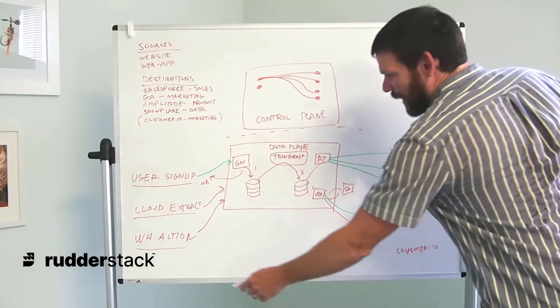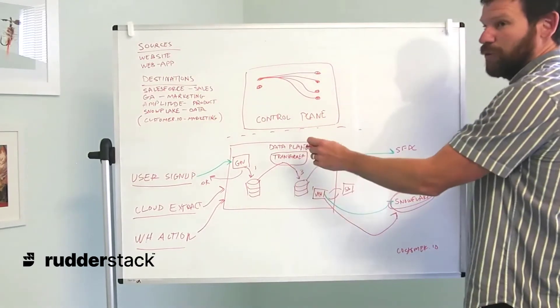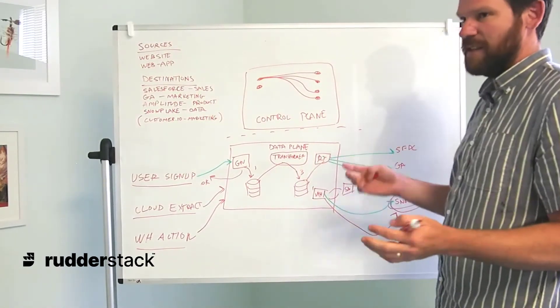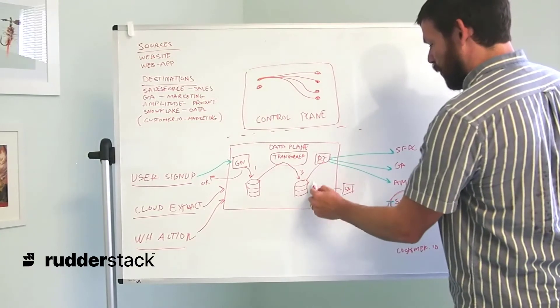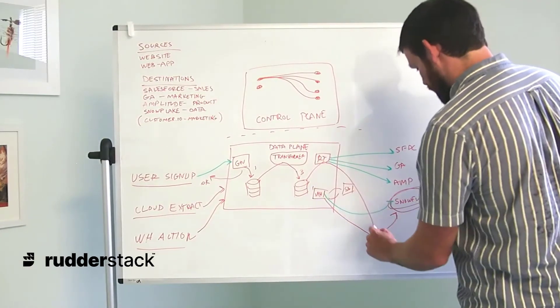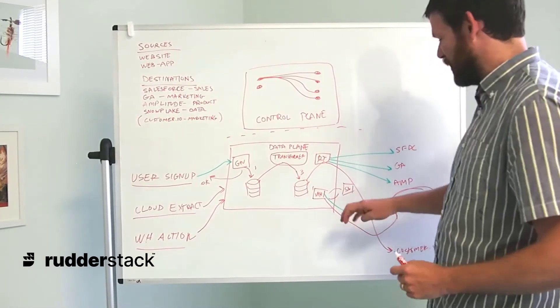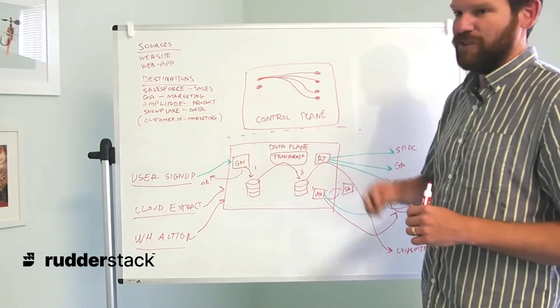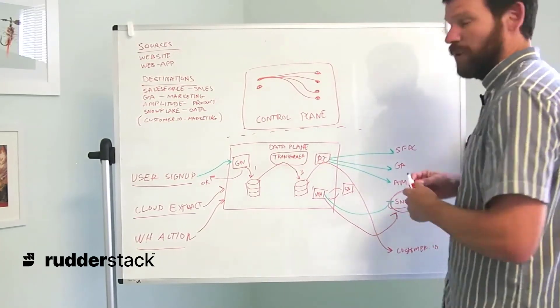That's going to be sent back through Rudderstack through Warehouse Actions and go through transformations, which we can modify as needed. Then that data will be sent back into Customer.io after it's been enriched with our cloud extract data and anything else we want to compute on top of our warehouse.